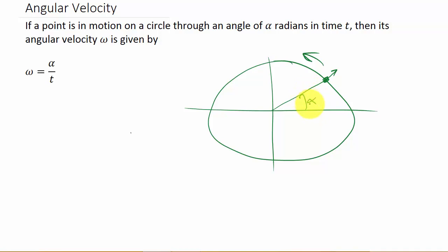Angular velocity is given in radians per unit of time - radians per second, radians per minute, radians per hour, and so on. So let's look at an example.